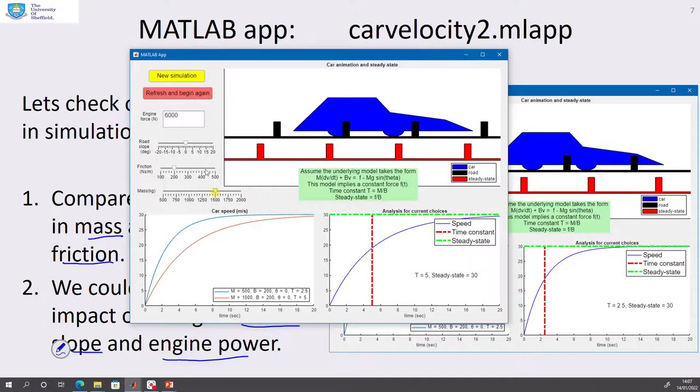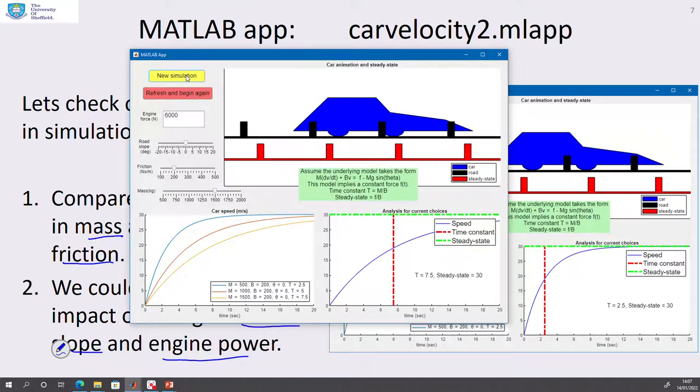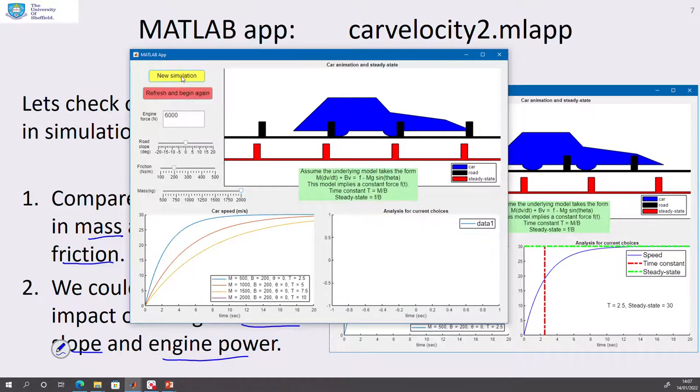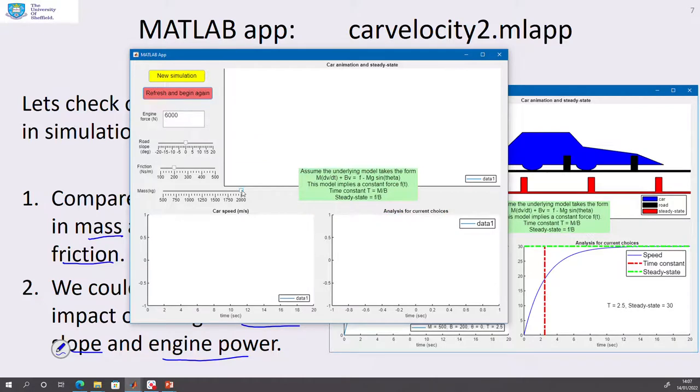So the time constant is slower, you can see this in the bottom right, but the steady state is the same. Let's make the mass even bigger: 1500. And run again. And what do you notice? The acceleration is slower, but again, the steady state is the same. So changing the mass seems to be changing the time constant, but not changing the steady state. And if we go up to 2000, just for completeness, you can see the same impact. So as the mass gets bigger, the time constant gets slower, the acceleration gets slower, but the steady state is the same. So let's clear all that. We'll take the mass back down to something sensible—let's say 1000.